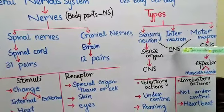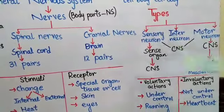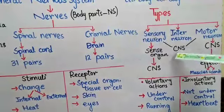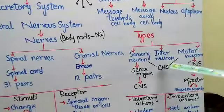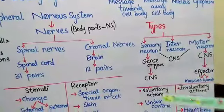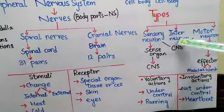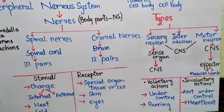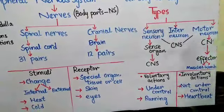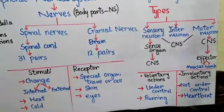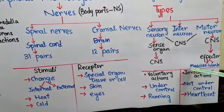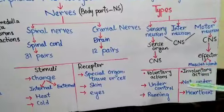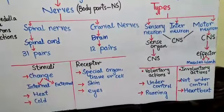Inter-neurons are located in the central nervous system — that is, the brain and spinal cord. The function of inter-neurons is to connect sensory neurons to motor neurons. Motor neurons transmit the message from the central nervous system to the effectors. Effectors can be muscles and glands, which produce a response in the body.